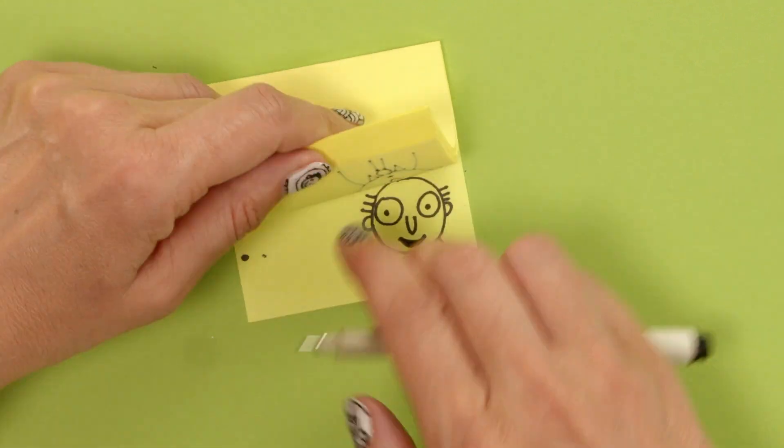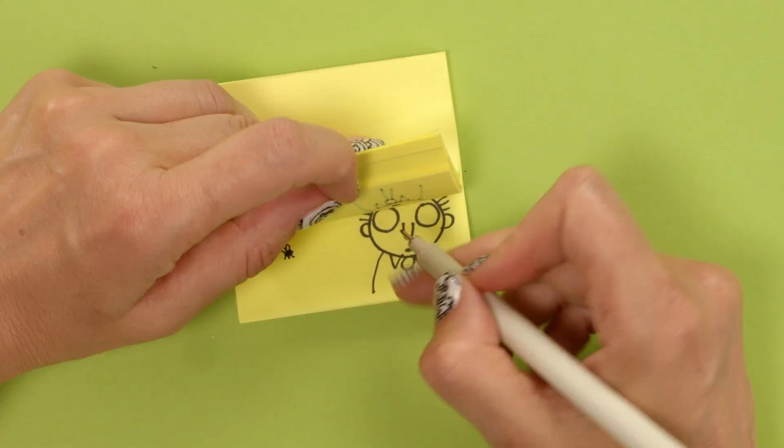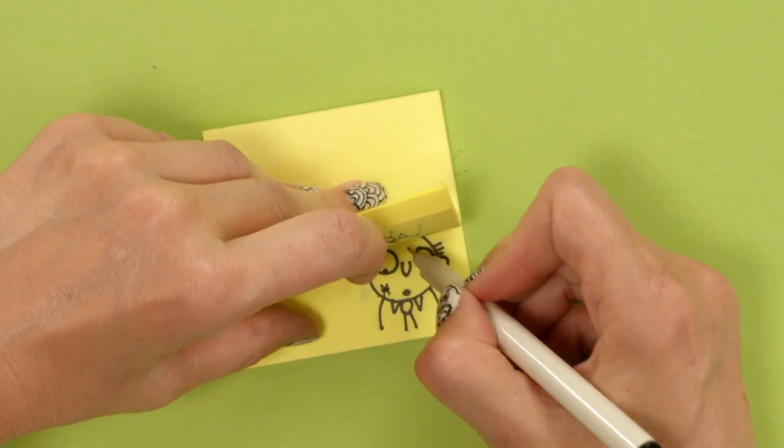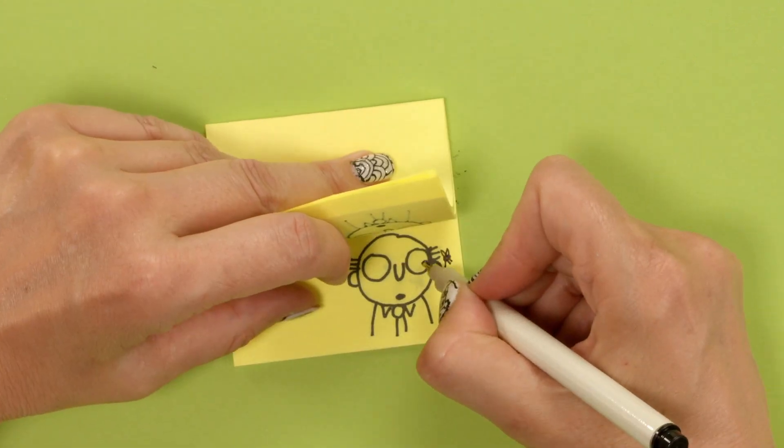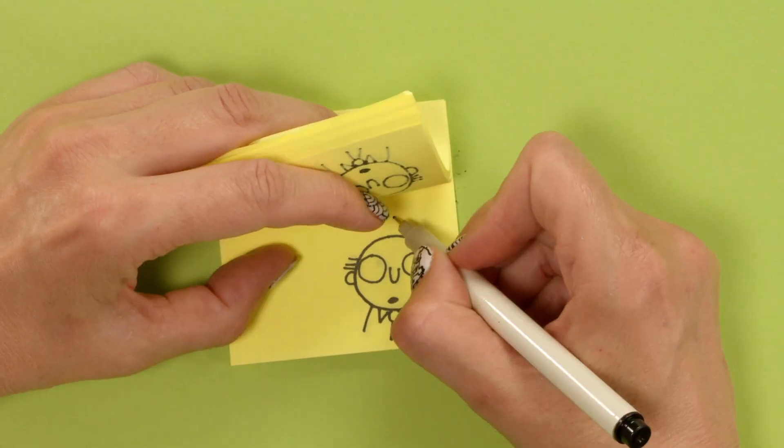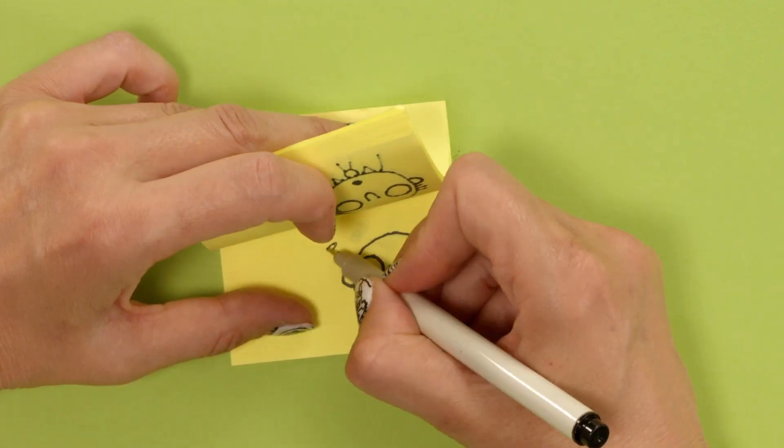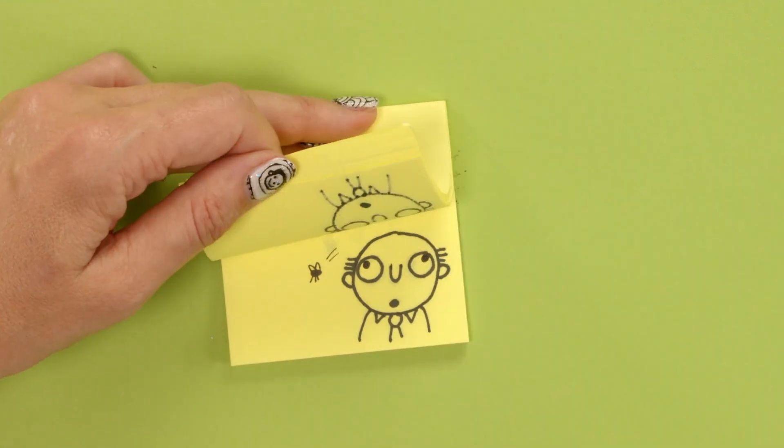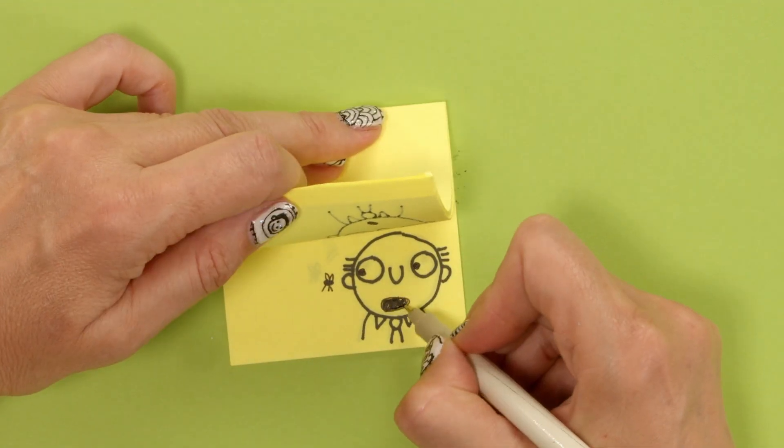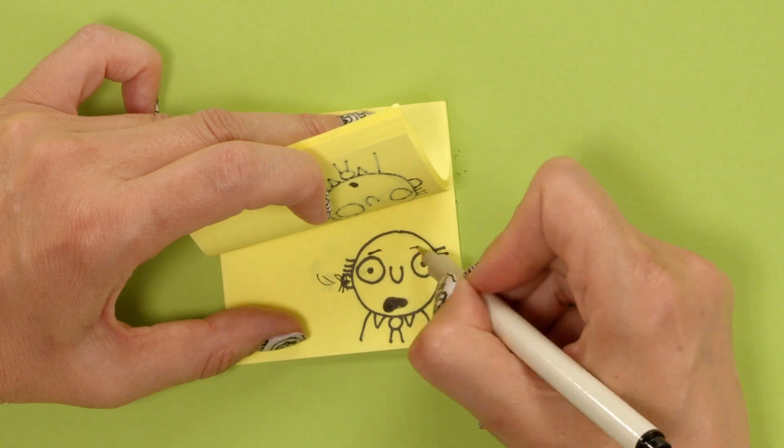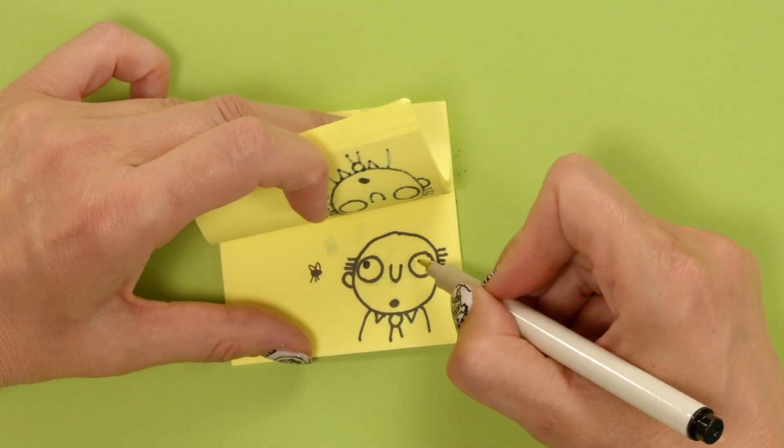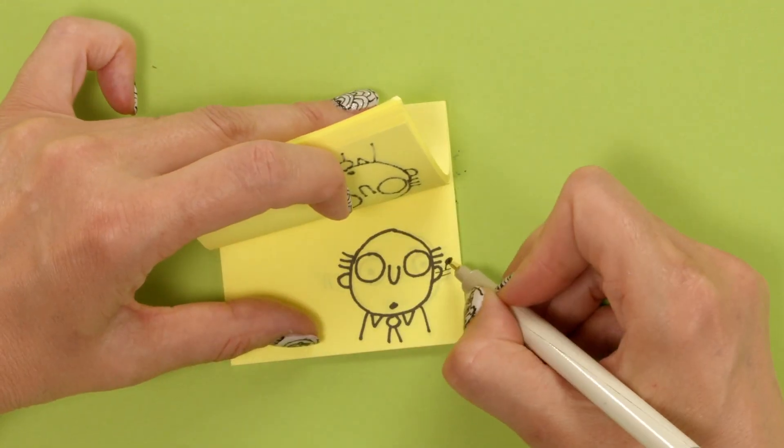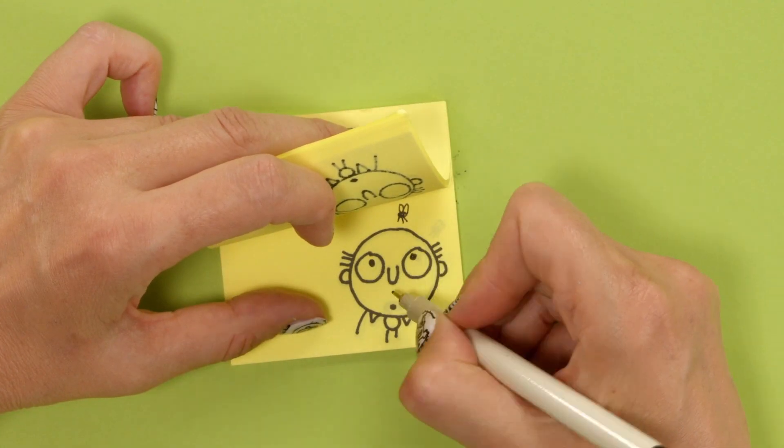Every time you do a drawing, you just move the fly just a little bit over. So I'm making Mr. Fullerman's eyes follow the fly, and then go in different directions as well, so he's going cross-eyed. So every time I do something, I'm just moving it a little bit. So you just draw it in a slightly different place than it was before, and you should be able to see what you've drawn underneath.